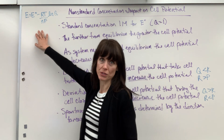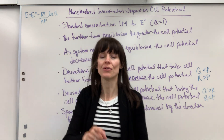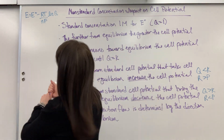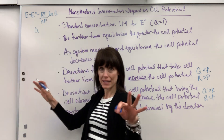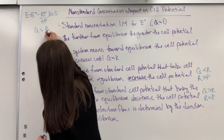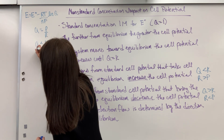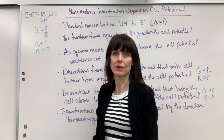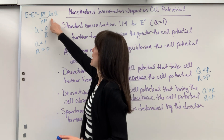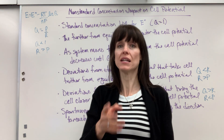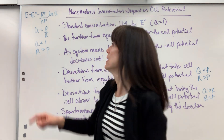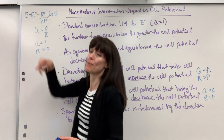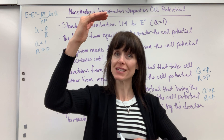Let me prove this with the Nernst equation. If Q is less than one, that means reactants are greater than products — I have a bigger denominator, so I have a fraction less than one. If you take the natural log of any number less than one, it's negative. Negative times negative means you take your standard cell potential and end up adding a value to it, which makes the voltage — the potential — higher.